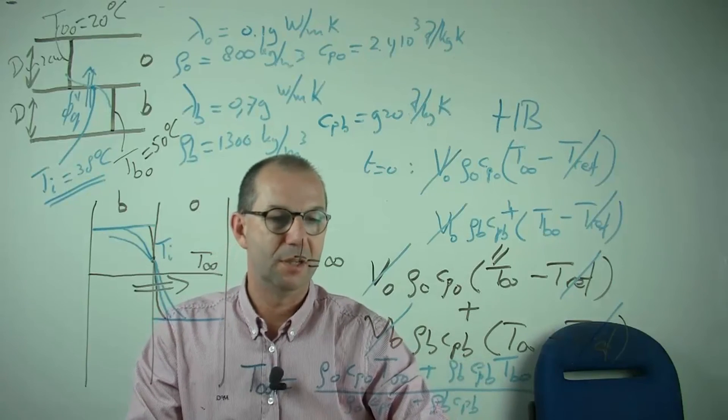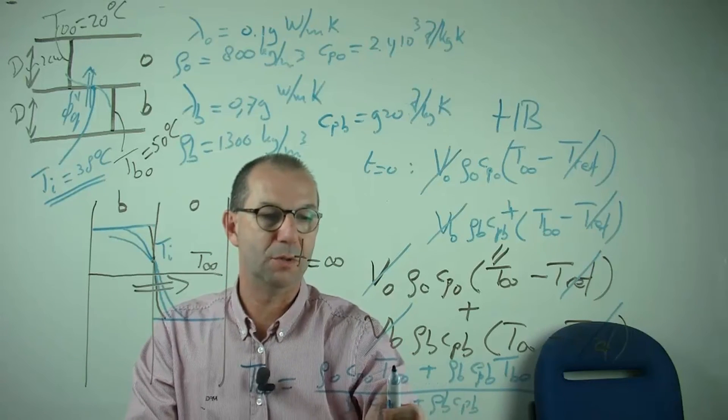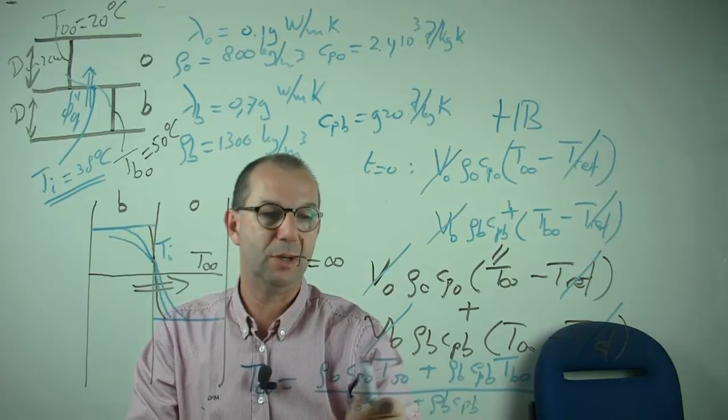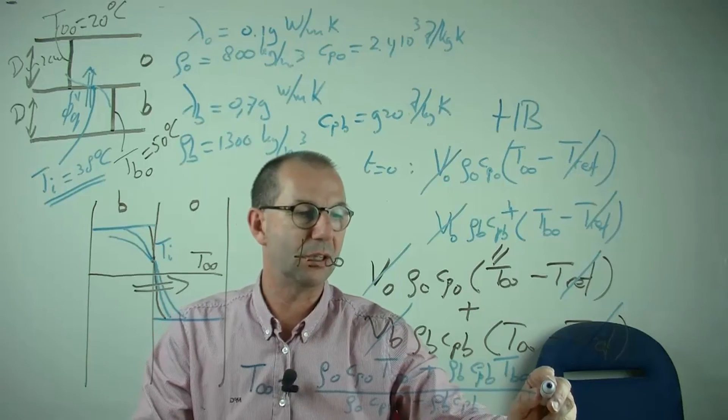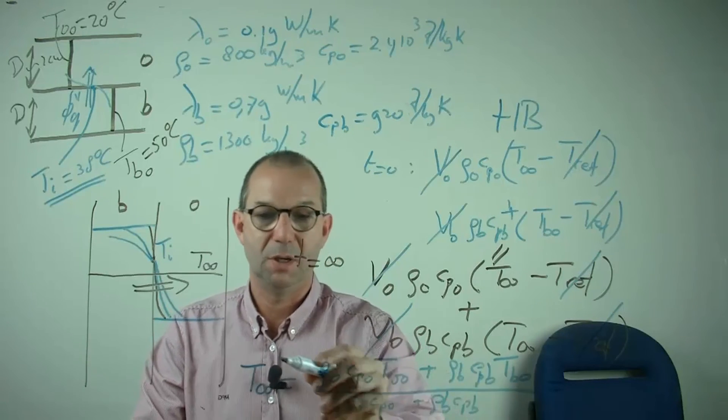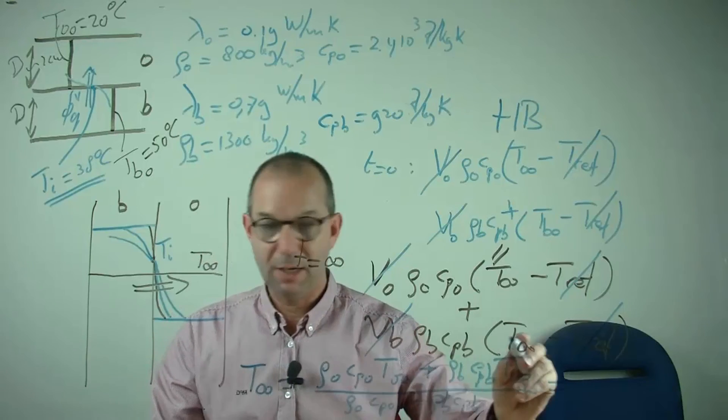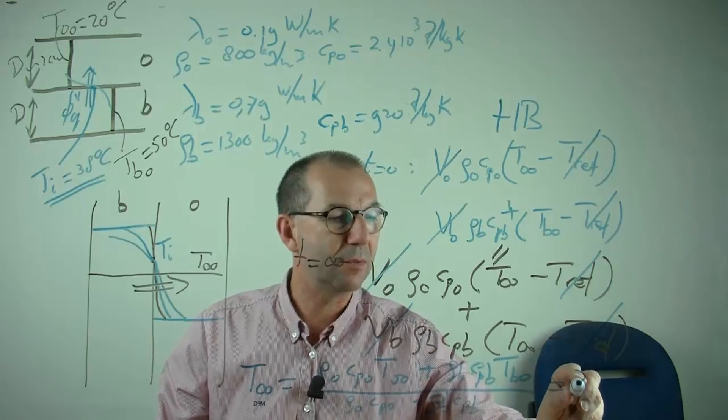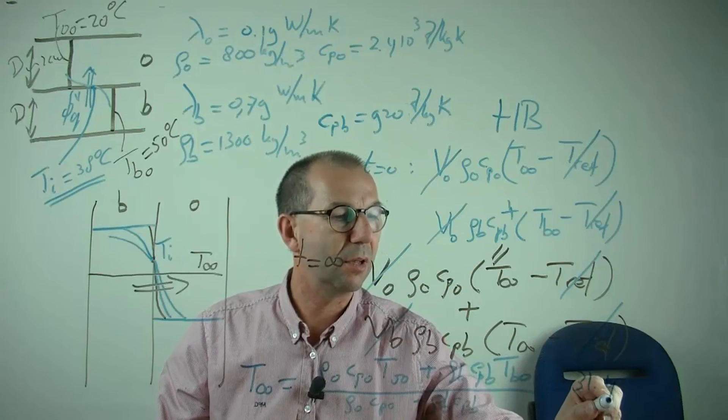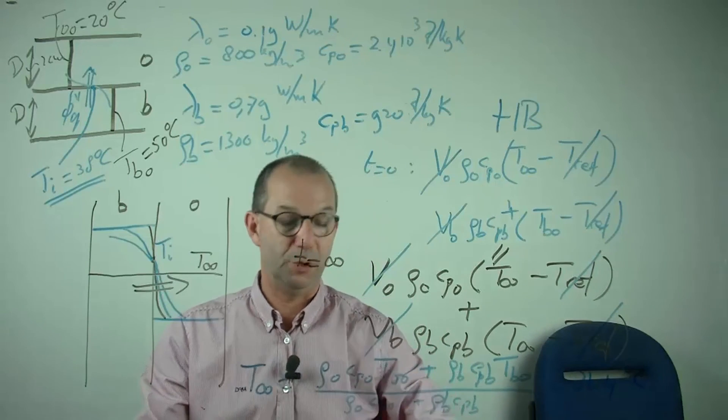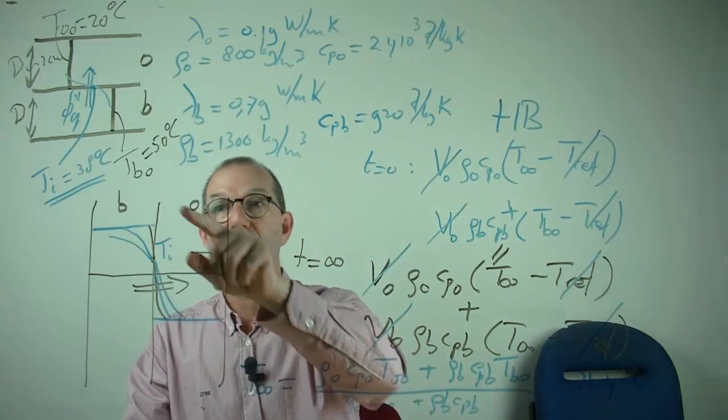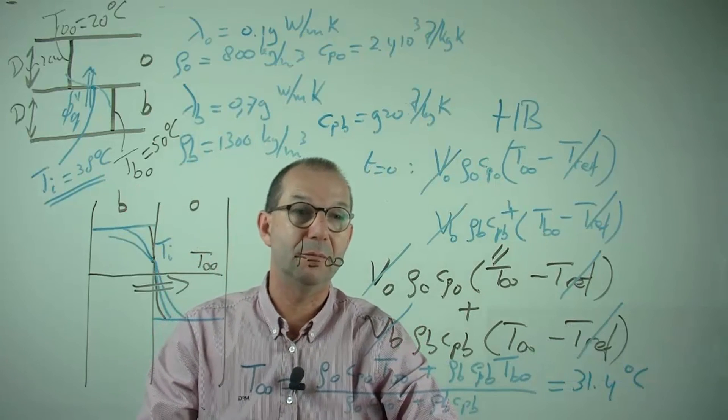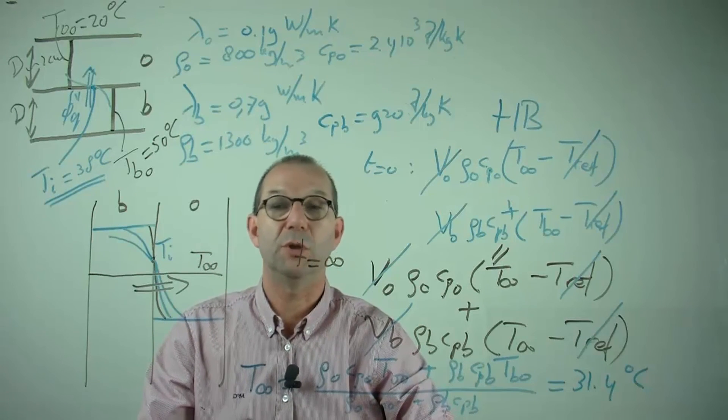This equation on the right hand side has an unknown. I know these temperatures, 20 and 50 degrees. I know these material properties and thus I can compute what the final temperature will be. And that is, if I did it all right on the computer, slightly more than 31 degrees. And indeed, that is different from the 38 that I found for the interface temperature.